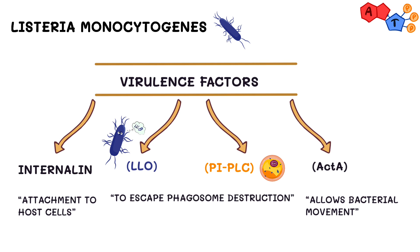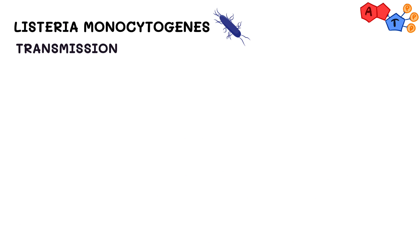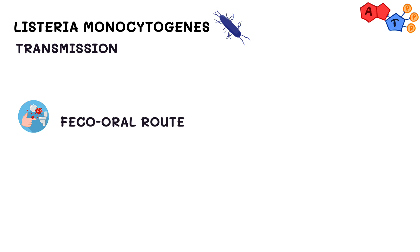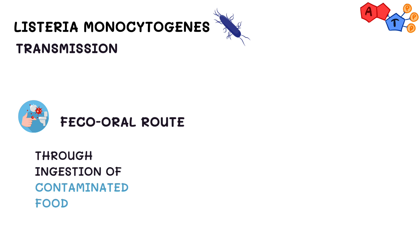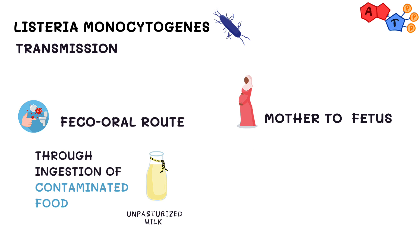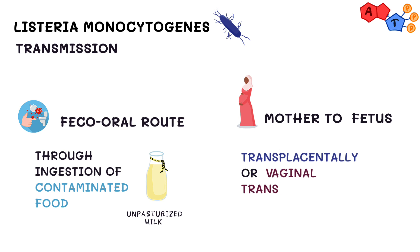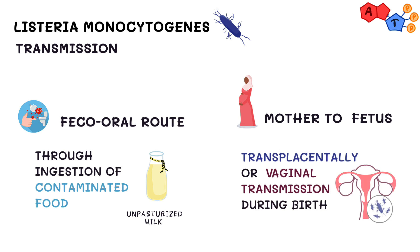Let's move on and talk about the transmission of Listeria. This mainly occurs by one of two ways: either via the fecal-oral route through ingestion of contaminated food such as unpasteurized milk, or from the mother to her fetus transplacentally, or by vaginal transmission during birth.